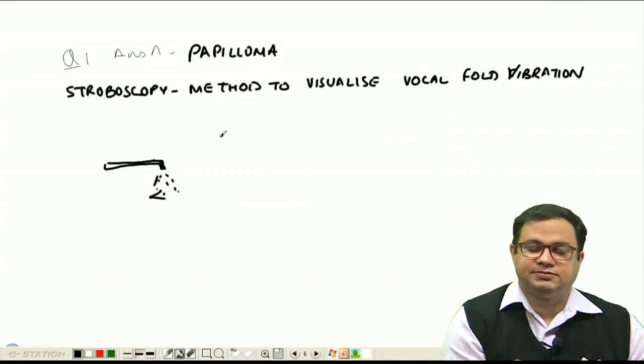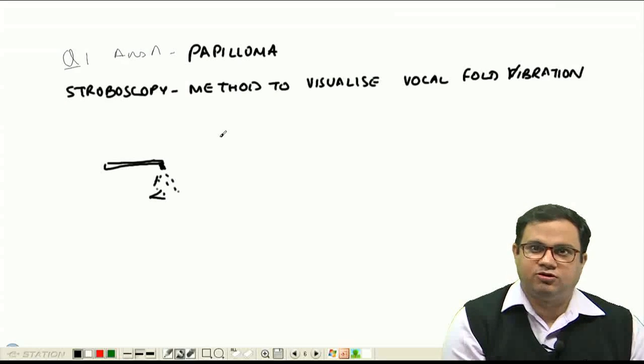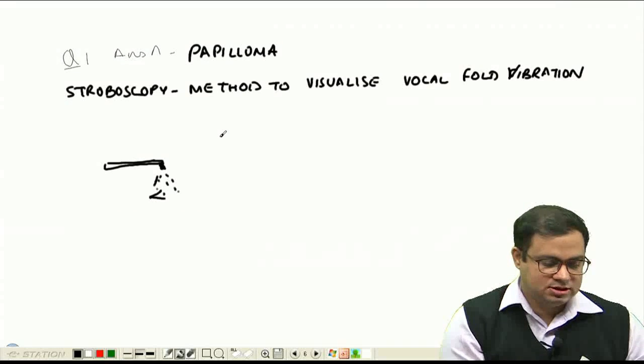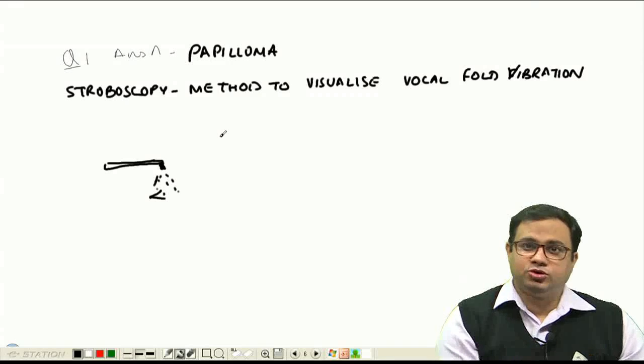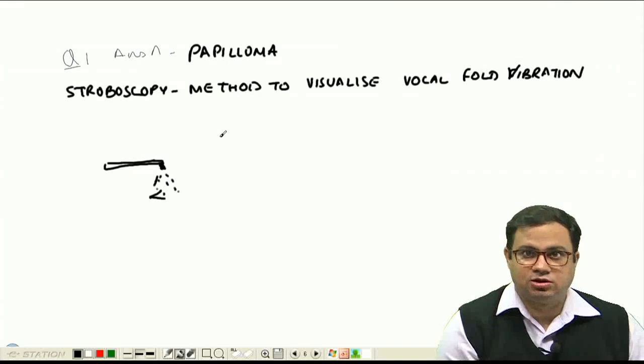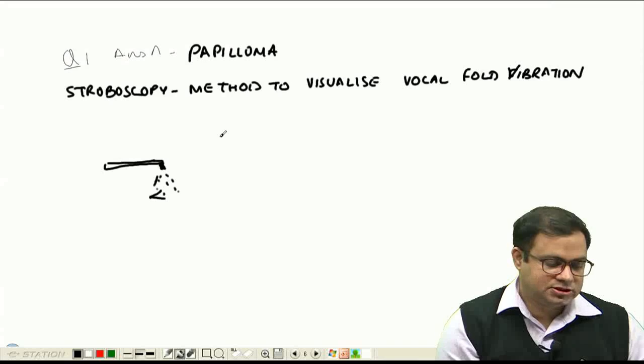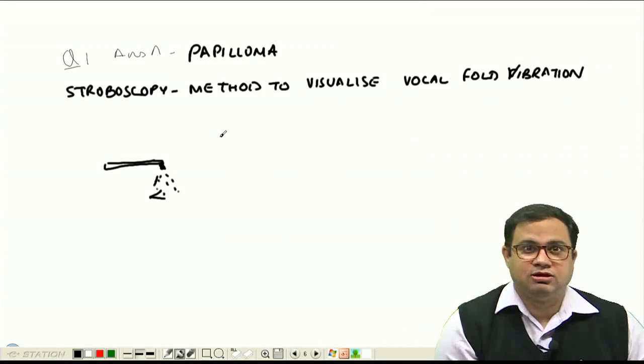As this is happening, we can easily see the pathology of the vocal cords. Suppose option number B, if a nodule is present, we can diagnose a nodule or an ulcer or neurological disorder. But option number A states it's a papilloma. We never use a stroboscope for a papilloma.